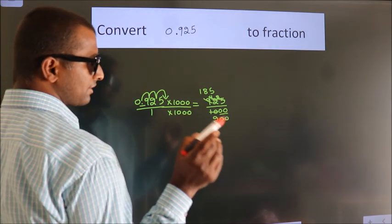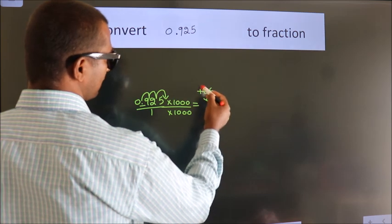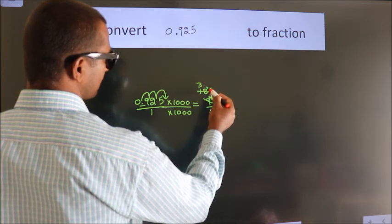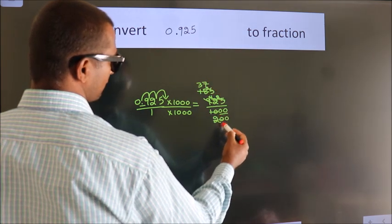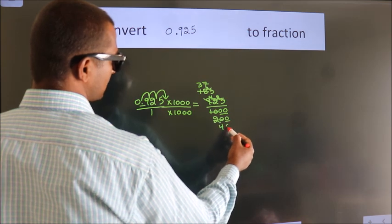I cancel with 5 again. 5 into 185 gives 37. 5 into 200 gives 40.